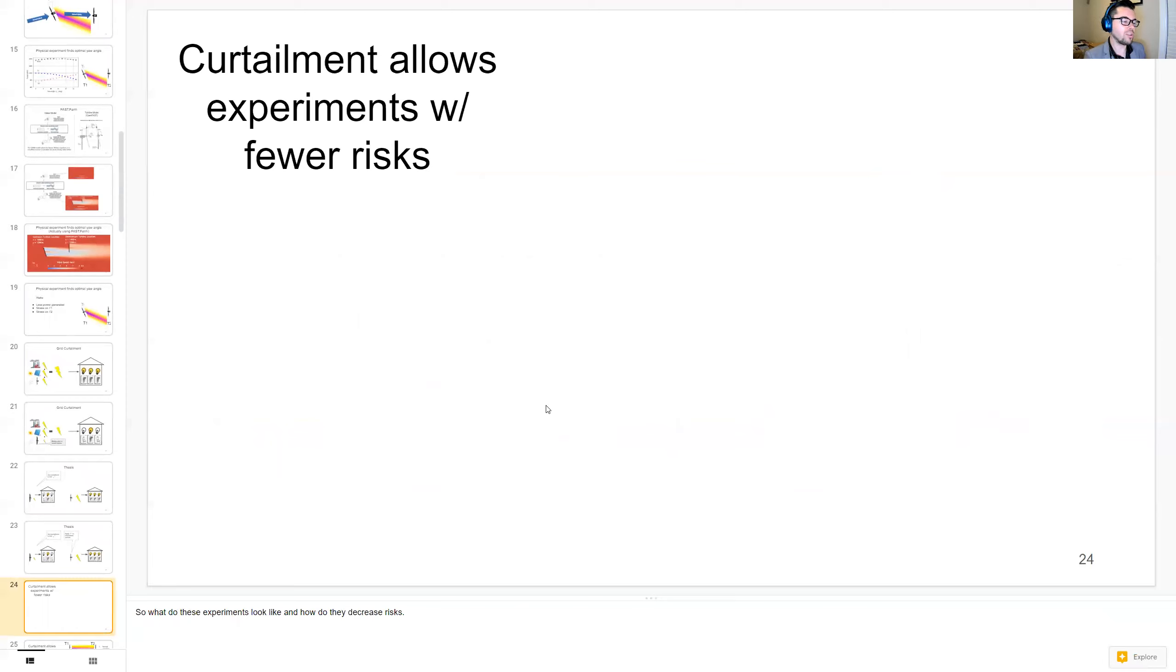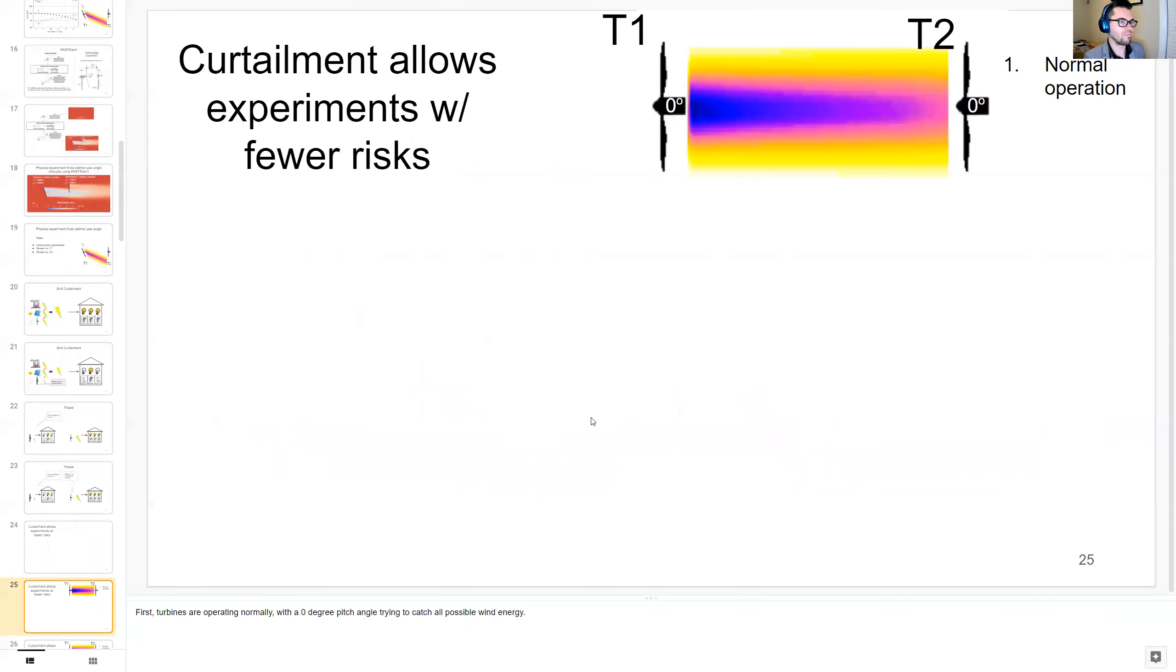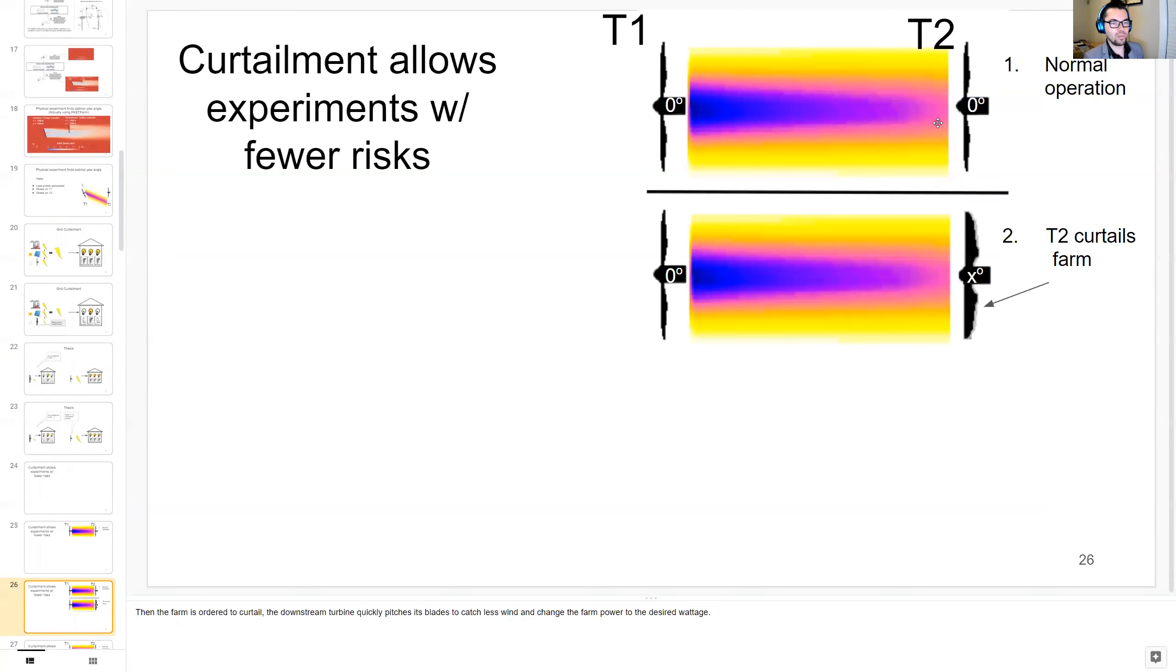So what do these experiments look like and how do they decrease the risks that I showed earlier? Basically the wind farm starts out with normal operation where zero degree pitch is being used, it's region 2 wind speeds, and then an order comes in to curtail the second turbine. It starts pitching its blades, decreasing the amount of wind it captures, and therefore decreases the desired wattage. Then lastly, the upstream turbine explores yaw angles while the downstream turbine continues varying its pitch to keep farm power at the desired wattage.